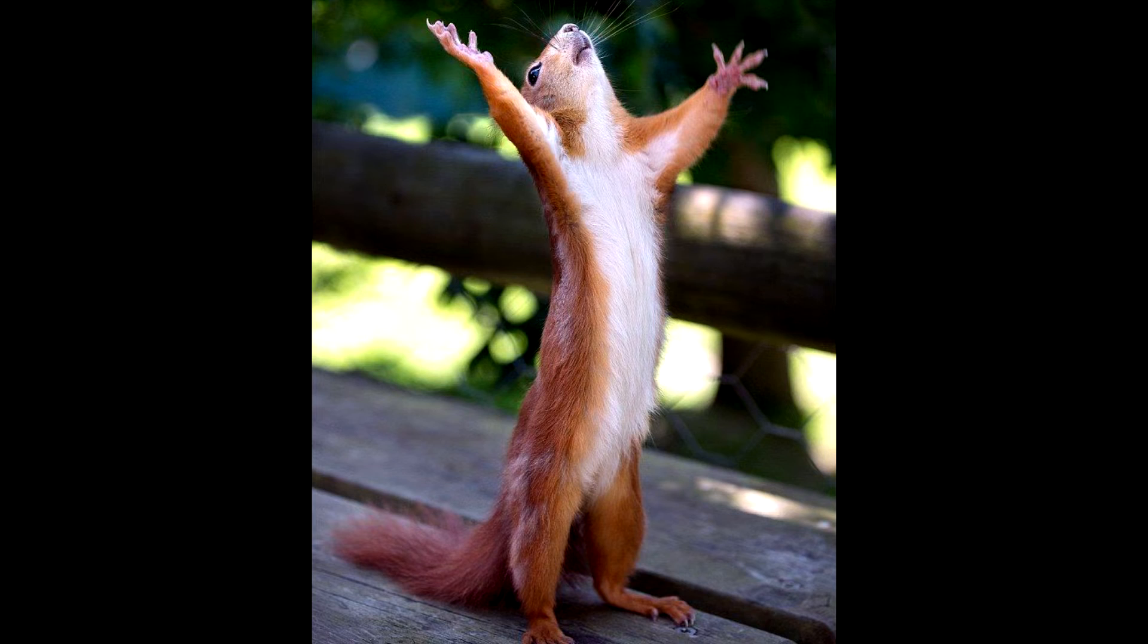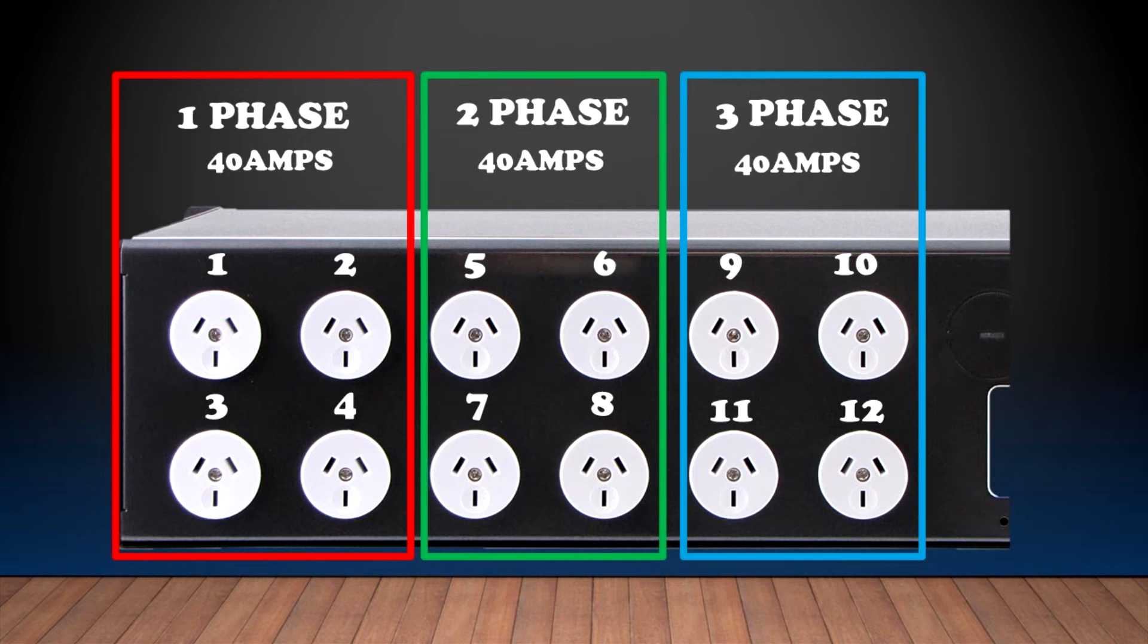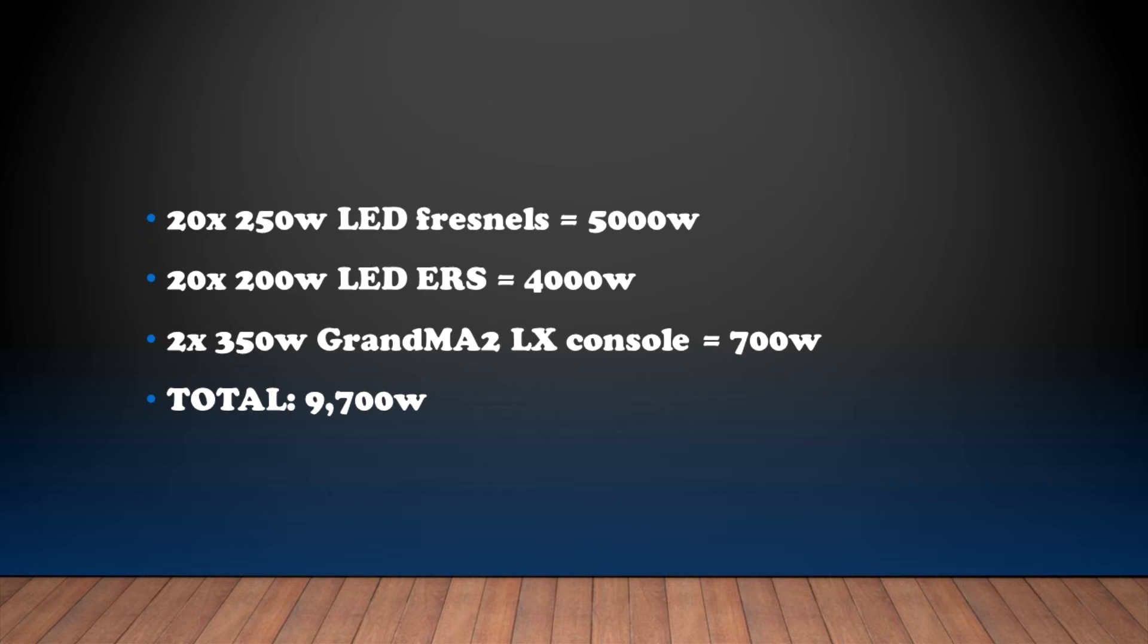Now, let's get back to our three-phase distro. This one in particular that we picked from Jands has three phases that can do 40 amps per phase. So if voltage is 240 volts multiplied by 40 amps, we then get 9,600 watts per phase, giving a total of 28,800 watts. So let's have another scenario here with some lights and equipment.